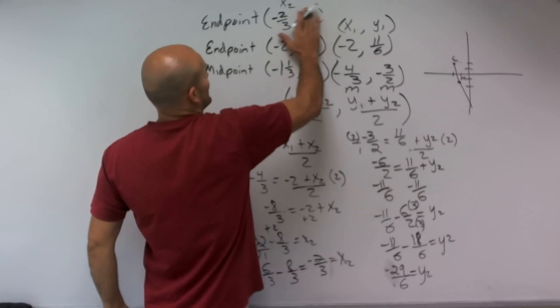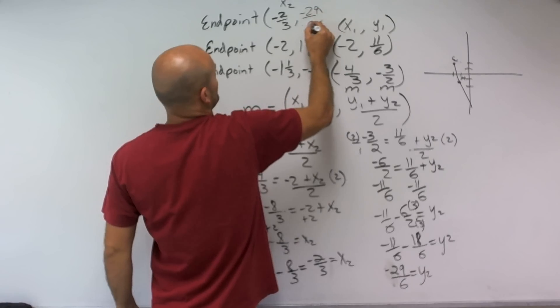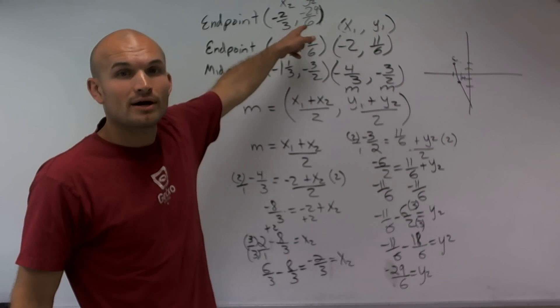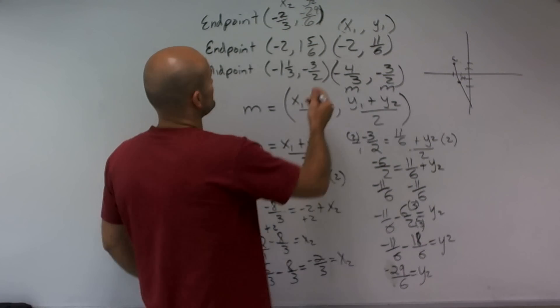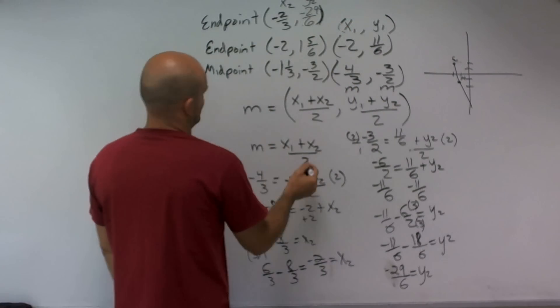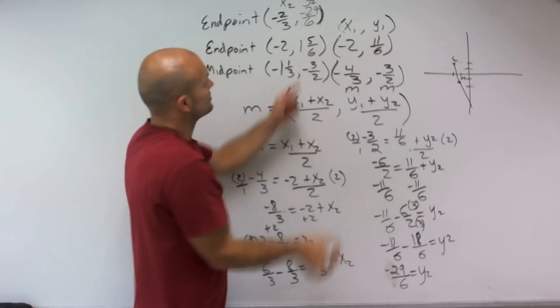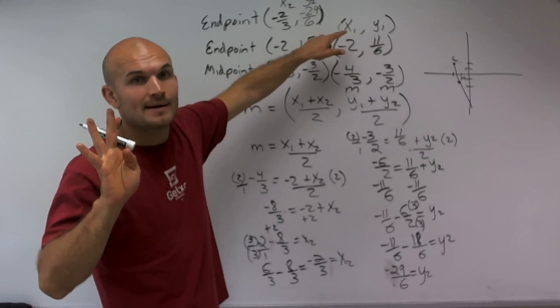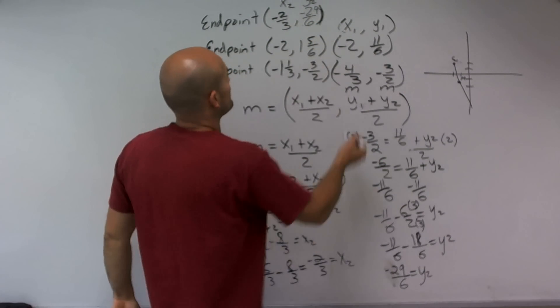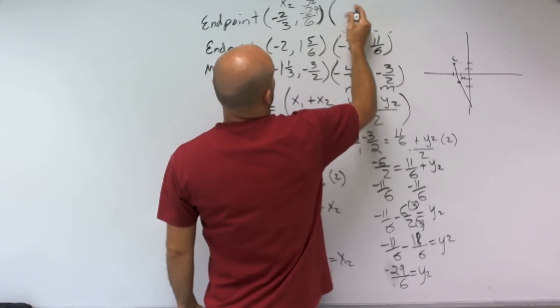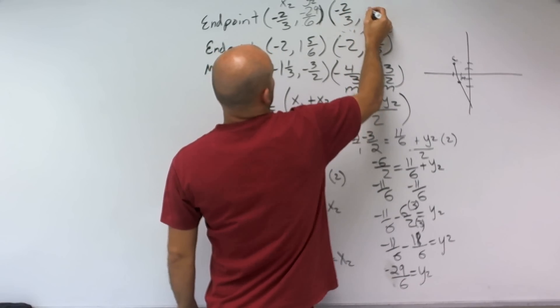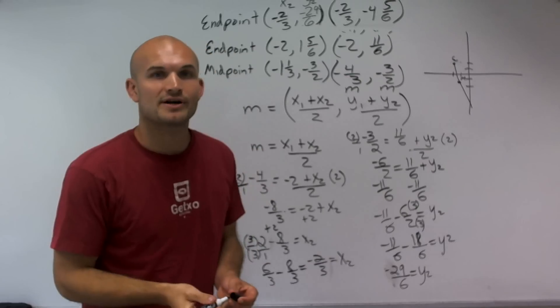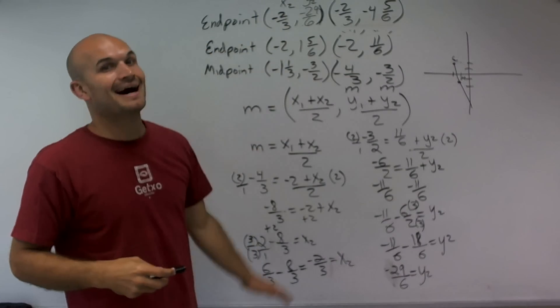So my answer right here, I can write negative 29/6, which is my y2, not y squared. And if you want to write that as a mixed number, how many times does 6 go into 29 as a whole number? Well, 6 goes into 29 four times with a remainder of 5. So you could also write it as negative 2/3 comma negative 4 and 5/6. So there you go. There's two ways to represent the answer and a lot of work for you.